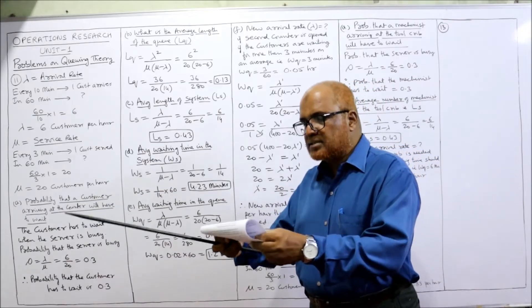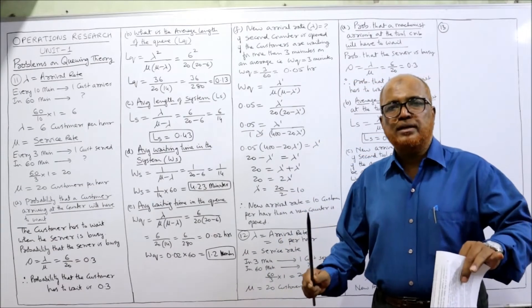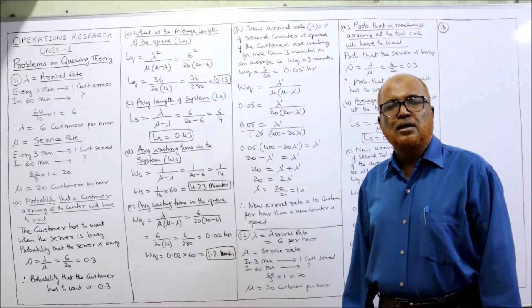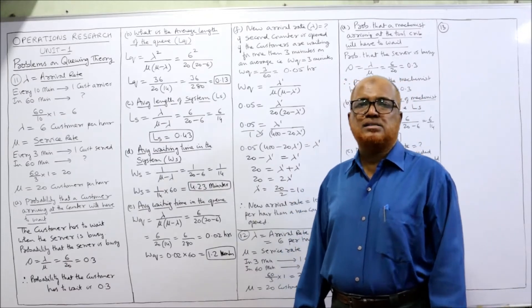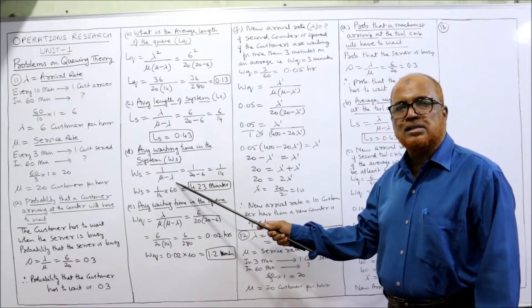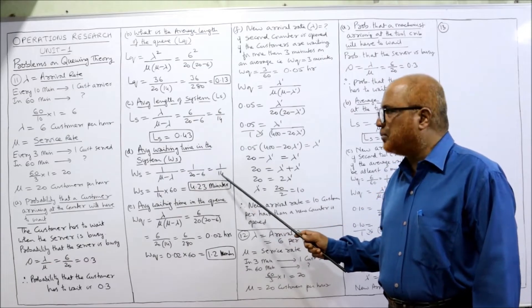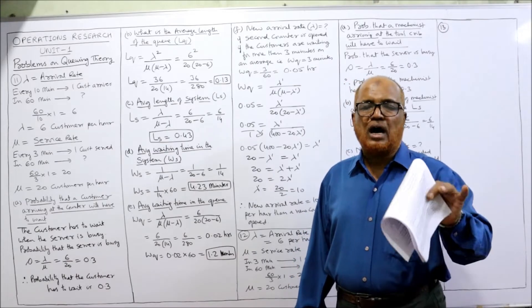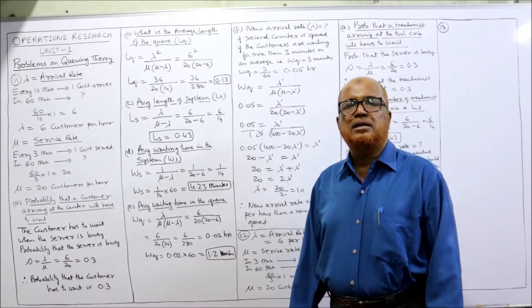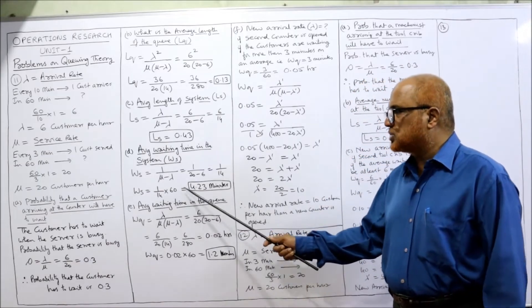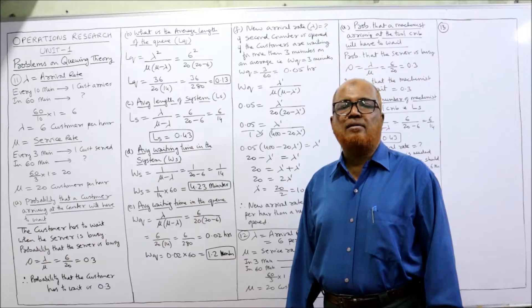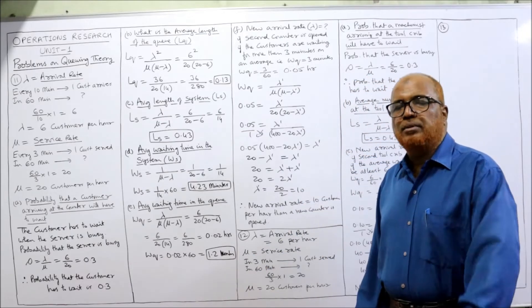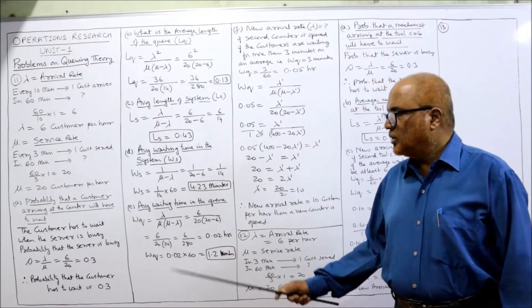Part D: what is the average waiting time in the system? That is WS — the average time a customer spends in the whole system. The formula for WS is 1 divided by (mu minus lambda): 1 divided by (20 minus 6) equals 1 divided by 14. This is measured in hours, so to convert to minutes multiply by 60: 1 divided by 14 times 60 gives approximately 4.23 minutes.